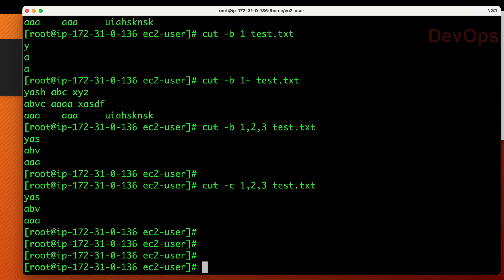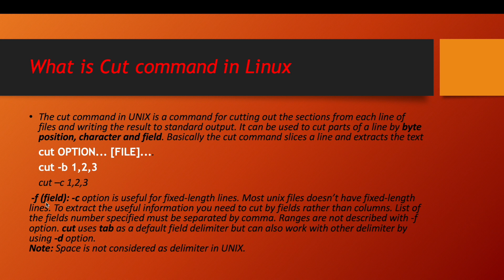The most important use of the cut command is field processing with delimiters. If you are using hyphen-f, that is for fields. The hyphen-c option is useful for fixed-length lines, but we will be using variable-length lines, so hyphen-f is the perfect option. Most Unix files do not have fixed length. To extract useful information, you need to cut by field rather than columns. The list of field numbers must be separated by comma. Cut uses tab as the default field delimiter but can also work with a custom delimiter using the hyphen-d option.